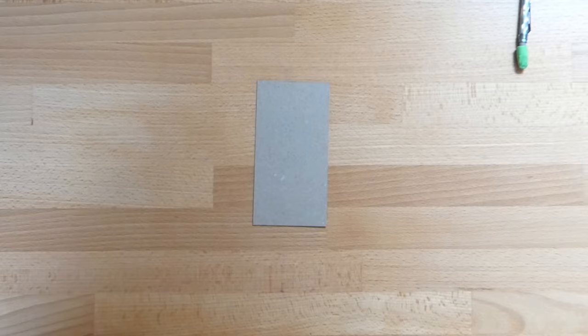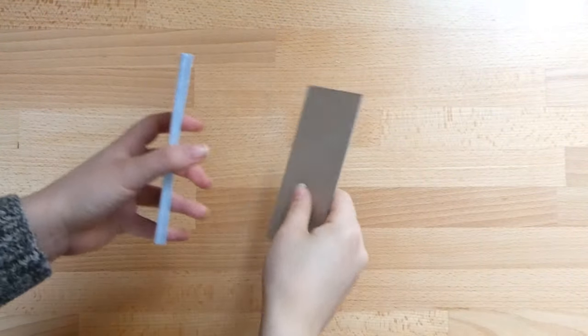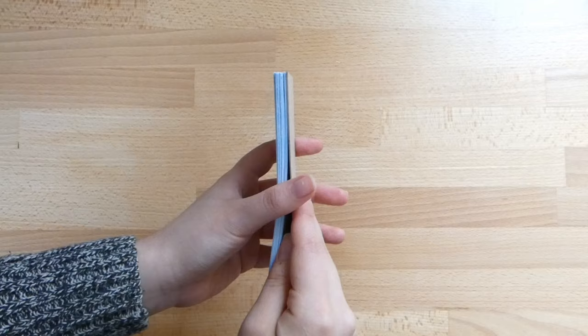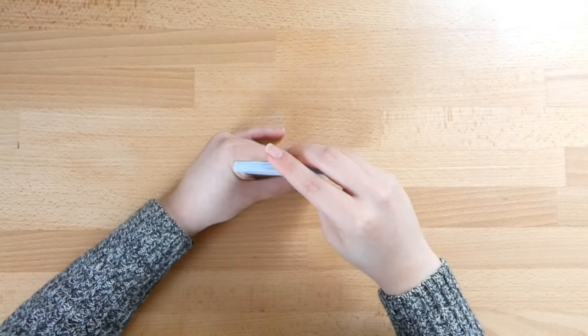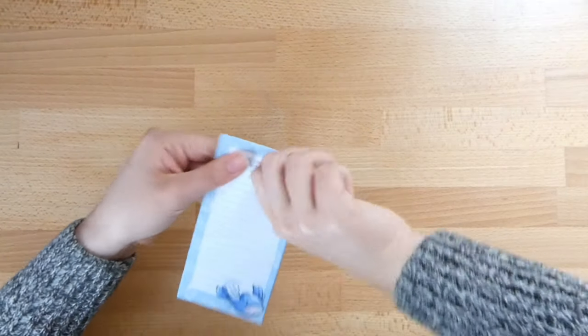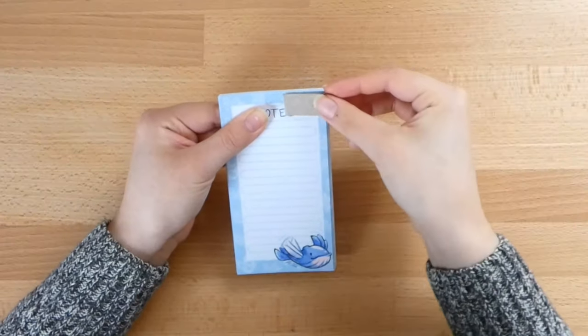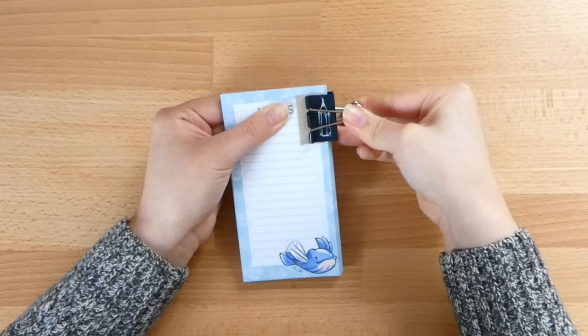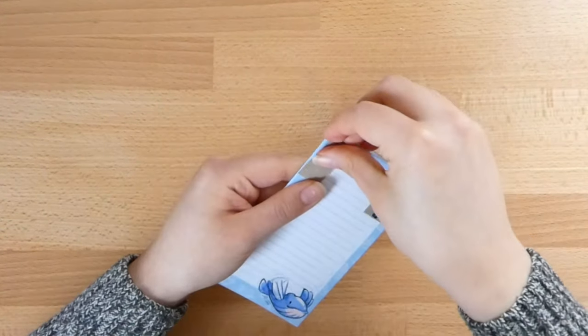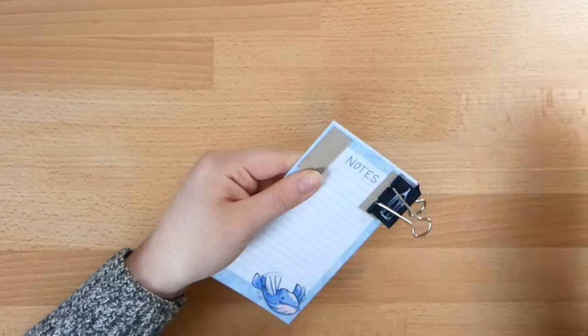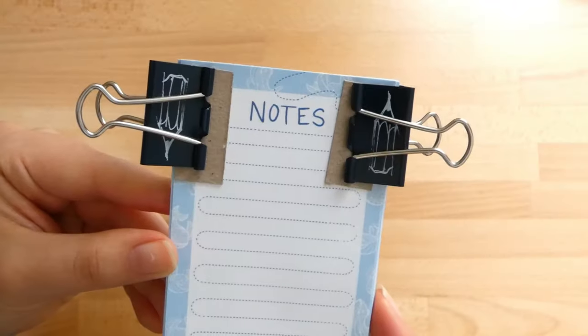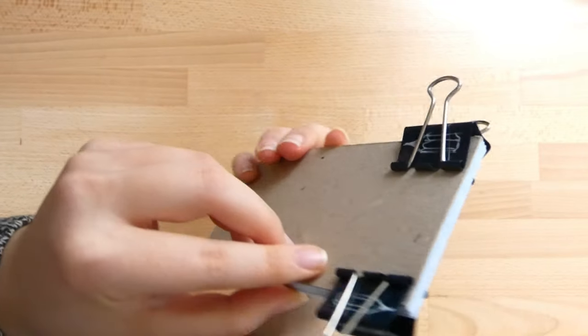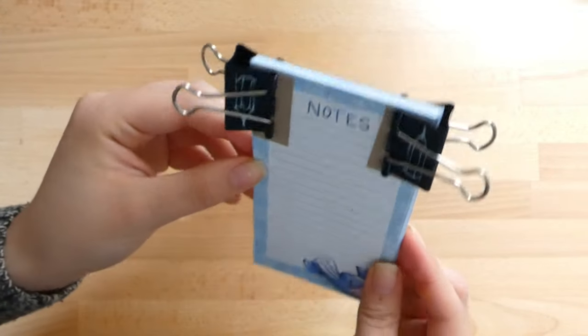You're going to want to take all of your notepad pages and line them up against the chipboard, and try to get all of the pages to line up as best as you possibly can at the top of the notepad. Then use your binder clips to hold everything in place. I like putting extra pieces of chipboard like so. This way the binder clips don't dig into the notepad pages.